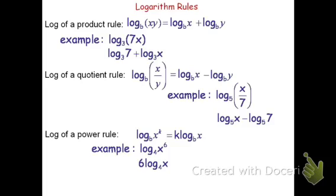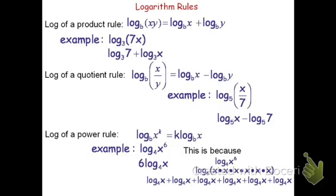Now I want to explain why this works. If we're saying log base 4 of x to the 6, this can be rewritten as the log base 4 of x times x times x times x times x times x — six times. Using the log of a product rule, we can expand this as log base 4 of x plus log base 4 of x, six times. Because we have 6 of these log base 4 of x's, we can say this is 6 log base 4 of x.